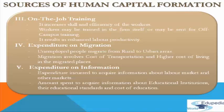The next source is expenditure on migration. People migrate from one place to another in search of jobs that fetch them higher salaries. Unemployed people from rural areas migrate to urban areas in search of jobs. Technically qualified persons like engineers and doctors migrate to other countries because of higher salaries available there. Migration in both these cases involves two kinds of costs: cost of transportation from one place to another, and higher cost of living in the migrated place. Expenditure on migration is a source of human capital formation as enhanced earnings in the migrated place are more than the increase in cost due to migration.